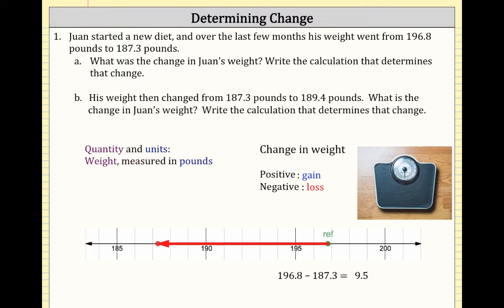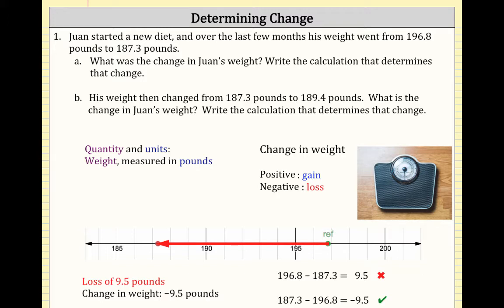Looking at the calculations: one option is 196.8 minus 187.3, which gives 9.5. Or to find the change in weight, you take 187.3 minus 196.8, which gives negative 9.5. Since Wan did lose 9.5 pounds, the change is negative — so the second calculation is correct. The first calculation gives a positive 9.5, which would represent a gain, not a loss.